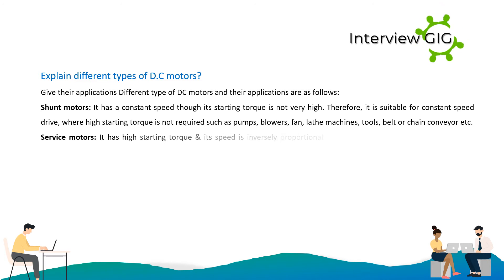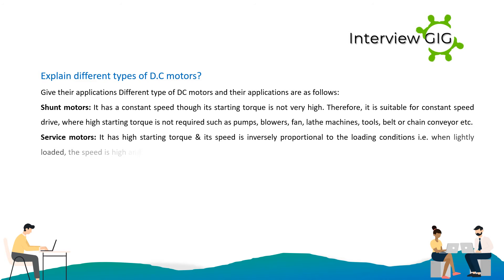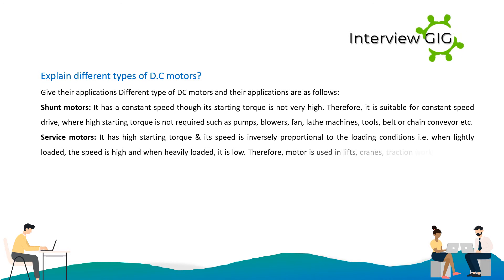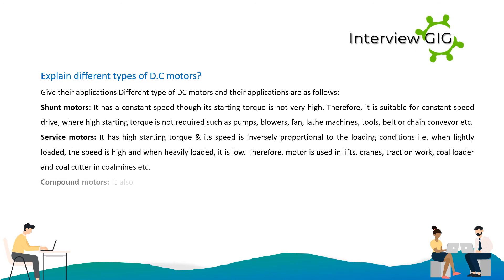Series motors: they have high starting torque and their speed is inversely proportional to loading conditions — when lightly loaded the speed is high, and when heavily loaded it is low. Therefore, they are used in lifts, cranes, traction work, coal loaders and coal cutters in coal mines.